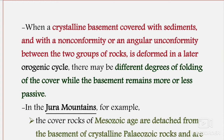When a crystalline basement — meaning it is formed of igneous or metamorphic rocks — is covered with sediments, with a nonconformity or angular unconformity between the two groups of rocks, and is deformed in a later orogenic cycle, the cover rocks may be folded to a greater extent while the basement remains more or less passive.